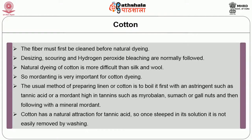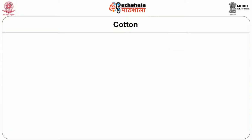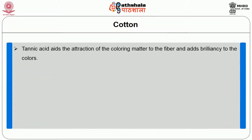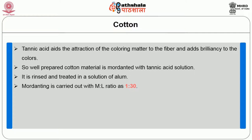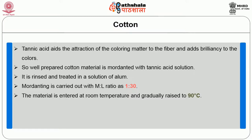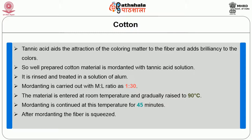Cotton has a natural attraction for tannic acid, so once steeped in its solution it is not easily removed by washing. Tannic acid aids the attraction of colouring matter to the fibre and adds brilliancy to the colours. Well-prepared cotton material is mordanted with tannic acid solution, rinsed and treated in a solution of alum. Mordanting is carried out with a material liquor ratio of 1 to 30. The material is entered at room temperature and gradually raised to 90 degrees centigrade. Mordanting is continued at this temperature for 45 minutes. After mordanting, the fibre is squeezed.